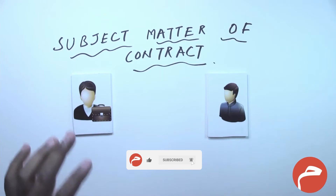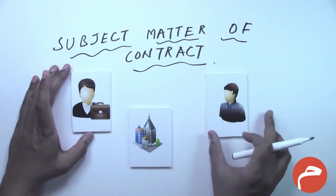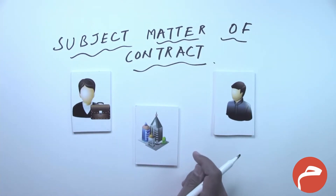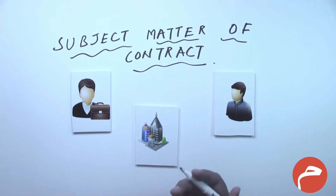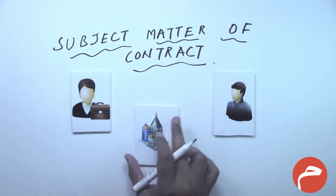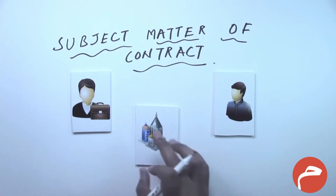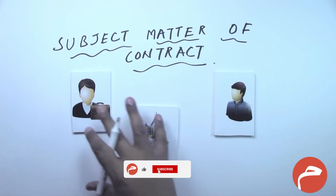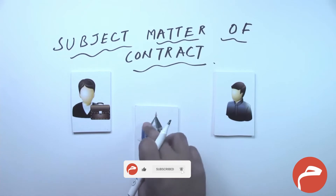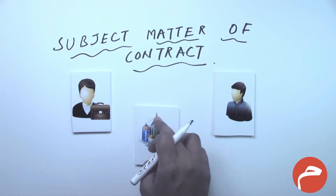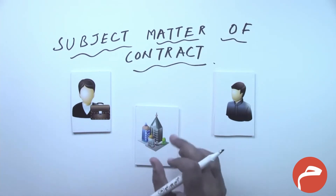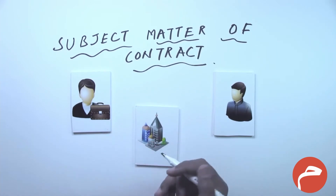Now we need to understand that in a contract the subject matter could either be a tangible asset, a usufruct, or services. These buildings are tangible assets. If the seller wants to sell its real estate to a purchaser, the subject matter is a tangible asset, and it has to be sharia compliant. A non-compliant asset cannot be a subject matter of a sharia compliant contract.